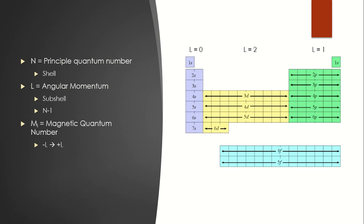Now this has a value of negative L to positive L, and this helps determine how many electrons can fit into that subshell.